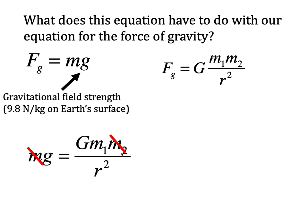So we can cancel one of them. It doesn't matter which one. They're kind of interchangeable. And then we have a new equation for little g. So little g is big G, m, over r squared.